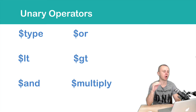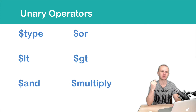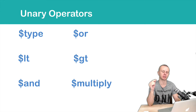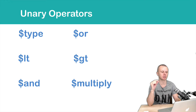Let's make a short overview of some unary operators. The type operator takes the value of a certain field and outputs its BSON type, like string or integer. Operators such as OR, less than, greater than, and AND take a condition or conditions as a value and return true or false depending on how those conditions are evaluated. For example, OR can take several conditions — if at least one is true, the result is true. The multiply operator can multiply two or more values.